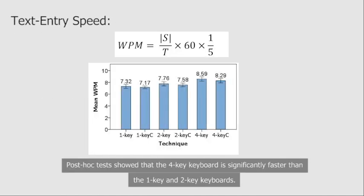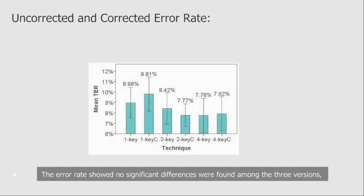Post-hoc tests showed that the 4-key keyboard is significantly faster than the 1-key and 2-key keyboards. The error rate showed no significant differences were found among the three versions.